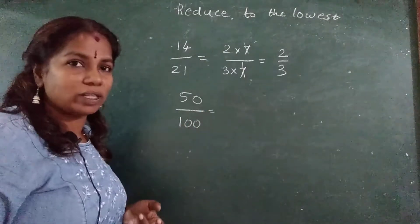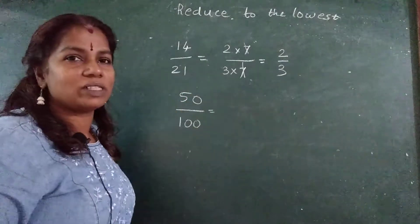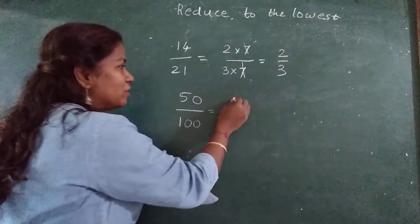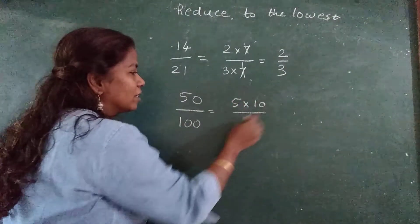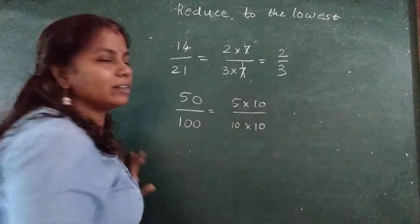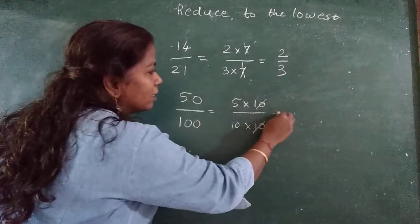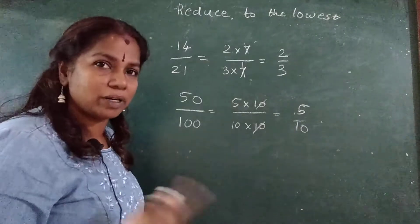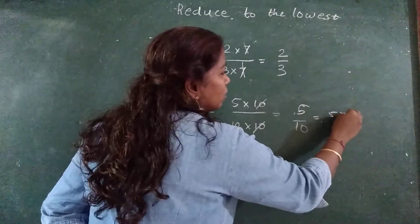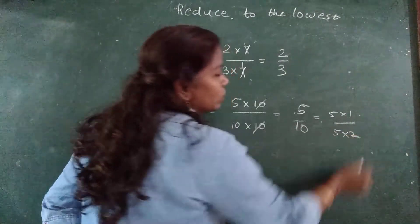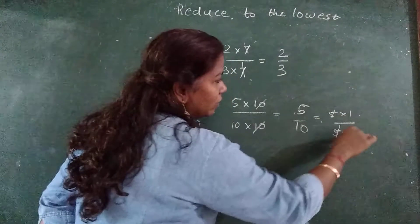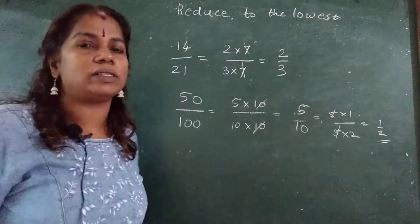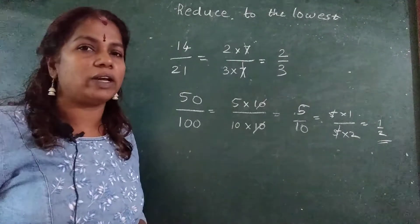Another simple number: 50 upon 100. If you are expert, what you can do? 50 ones are 50, twos are. But you don't know the table of 50. But we know the table of 10, right? So 5 tens are, 10 tens are. 10, 10 cancel. What is that? 5 upon 10. This 5 upon 10 can be reduced further. How? 5 ones are 5, twos are. 5, 5 cancel. 1 upon 2. Understood? How to reduce?